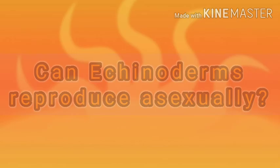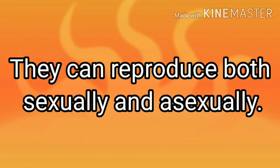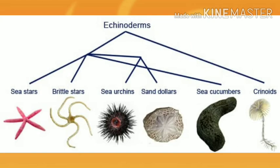Now for today's question: can echinoderms reproduce asexually? The answer is yes, because they show both types of reproduction — sexual and asexual. In sexual reproduction, the male produces sperm and the female produces ova; these are fertilized, a zygote is formed, a larva hatches, and then the adult form develops.